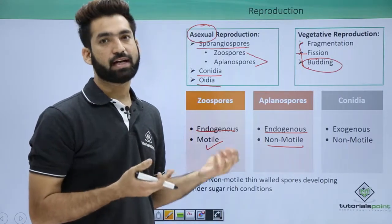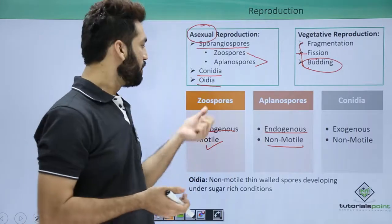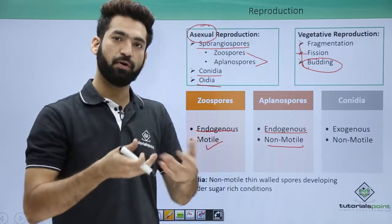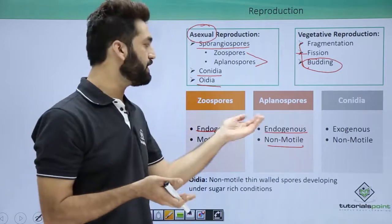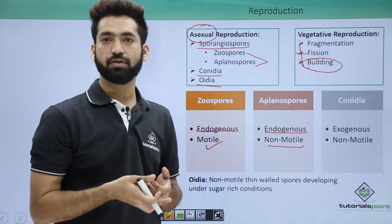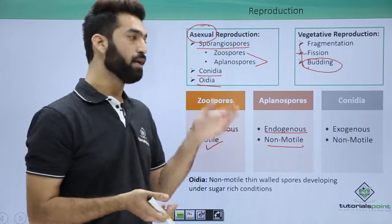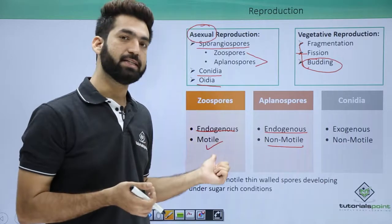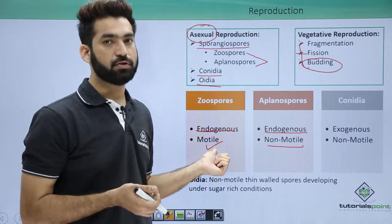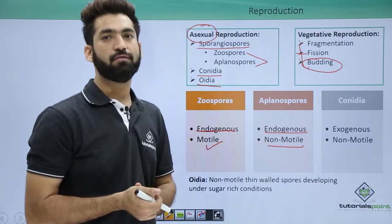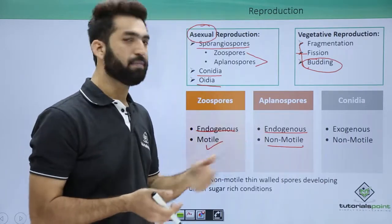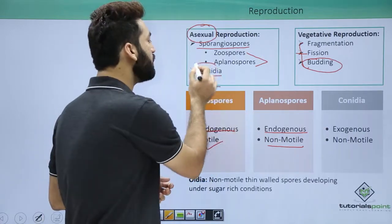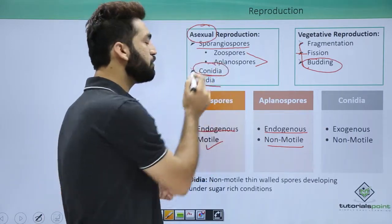Zoospores have flagella — the flagella can be one or two. Zoospores are produced inside that cavity, and aplanospores are also produced inside that cavity. Both are endogenous, but zoospores are motile while aplanospores are non-motile. Remember these differences.